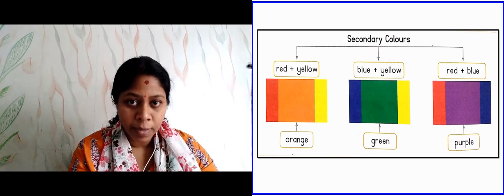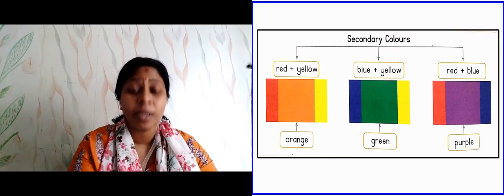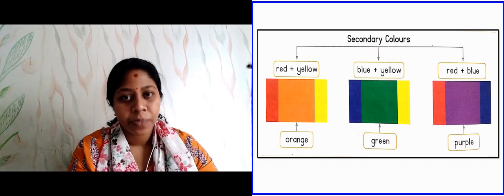So abhi jo ye primary colors ko, do-do primary colors ko mix karte huye, hume dusra jo color mila na, jo tisra color jo mila, usko hum secondary colors kehte hai. Thik hai?